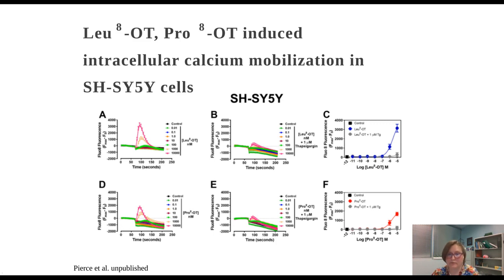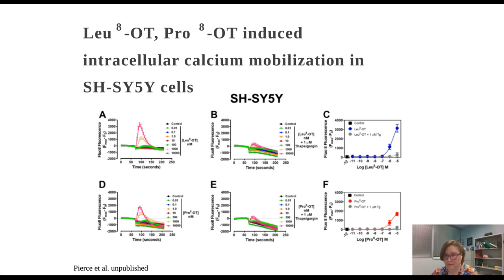We then assessed whether this was due to extracellular calcium entering the cell via calcium channels or intracellular calcium being mobilized via the endoplasmic reticulum. Figure A shows the leucine oxytocin response. Figure B shows the leucine oxytocin response pre-treated with one micromolar of thapsigargin, which causes a decrease in calcium release from the endoplasmic reticulum. Figure C shows the leucine oxytocin response was primarily abolished with thapsigargin pre-treatment, suggesting intracellular calcium mobilization in SH-SY5Y cells. The same experiment with proline oxytocin showed similar results. Val-3-pro8 assessment is currently ongoing in our lab.